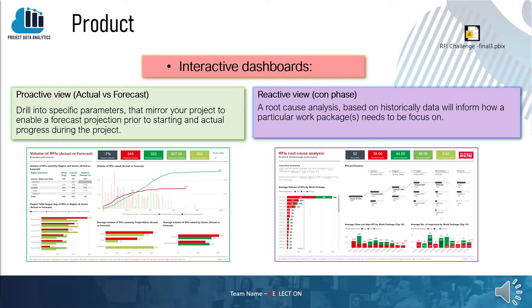The second view shows a root cause analysis, displaying the performance of different work packages across multiple projects. This will help the project manager identify problematic work packages and implement corrective actions in any of the live work packages.